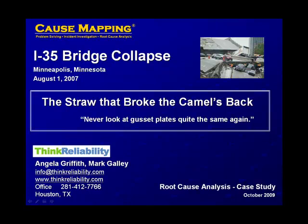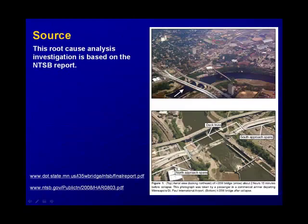The title that I have here is The Straw That Broke the Camel's Back, and it's got some detail specifically about the gusset plates that are causally related to this failure. These are pictures from the NTSB report. The top picture was taken by a passenger on a commercial flight just a couple hours before the bridge collapse. The web addresses for the NTSB report are listed at the bottom of the page.